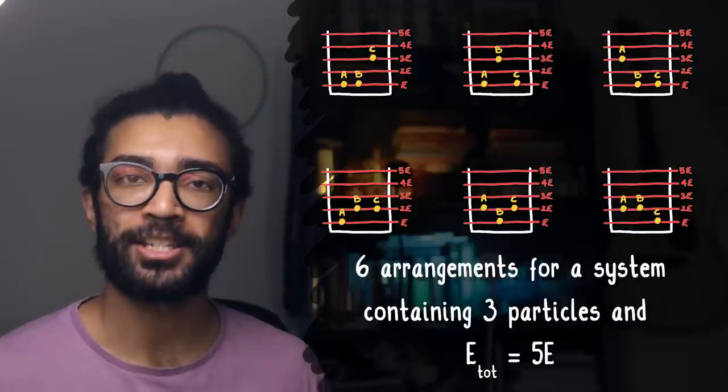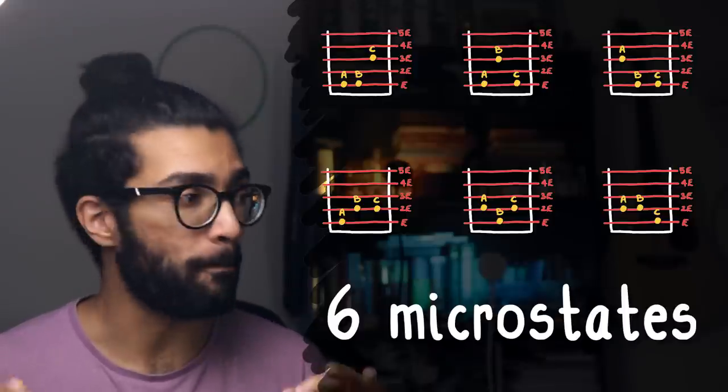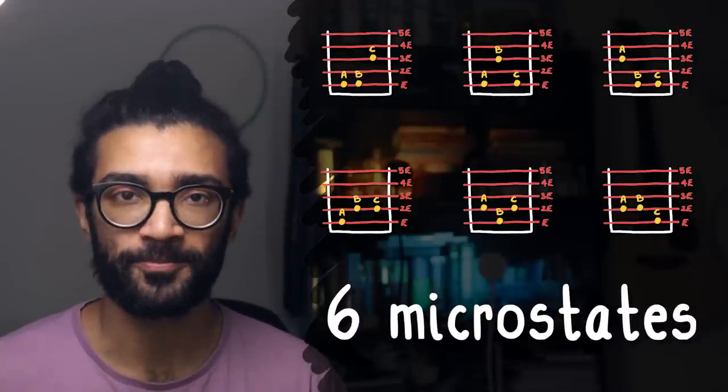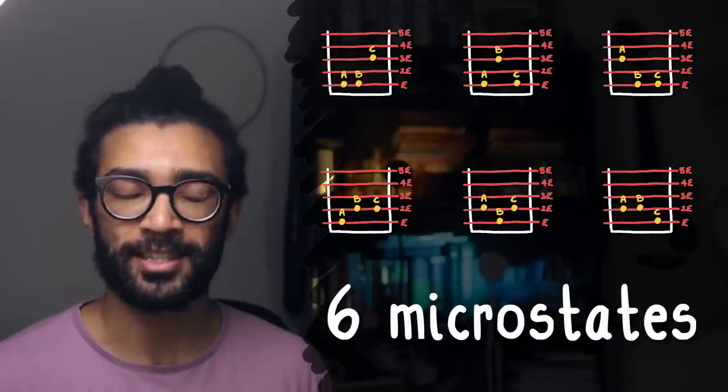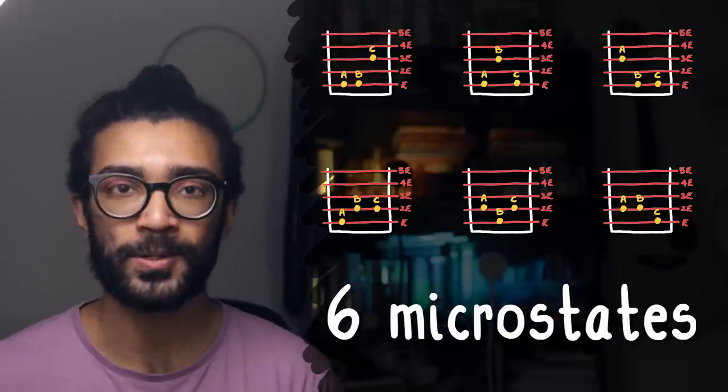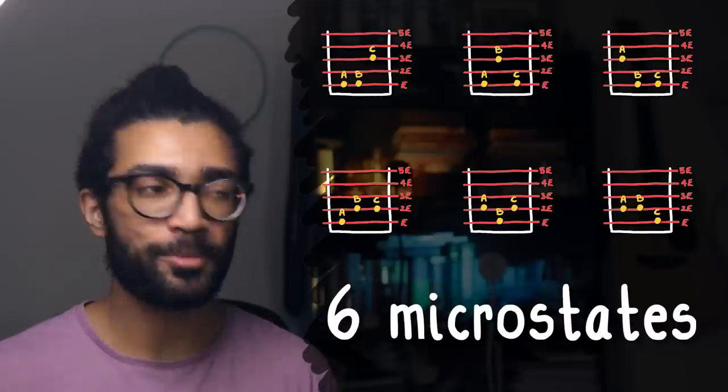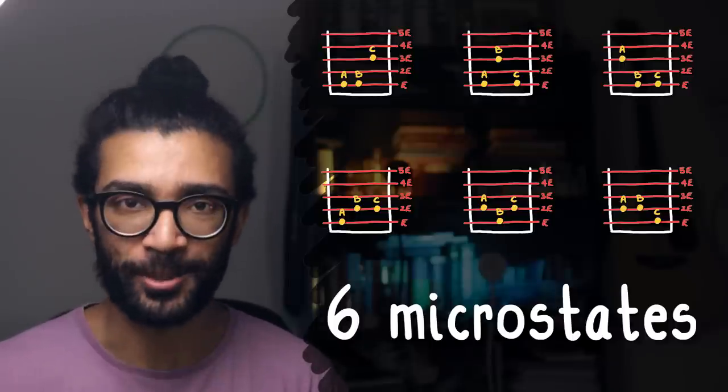These 6 possible ways of arranging our system are known as the 6 microstates of our system. And this total number of microstates that we can have for each system becomes very important when defining entropy.